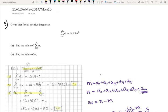Given that for all positive integers n, the summation of a_r where r equals 1 till n is given by this expression 12 plus 4n squared.